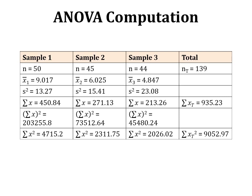The summation x — which is the sum of all individual observations — is 450.84 for sample 1, 271.13 for sample 2, and 213.26 for sample 3. The grand total is 935.23.